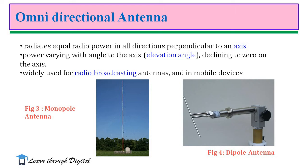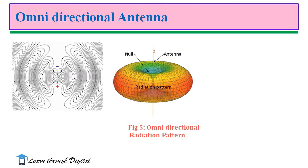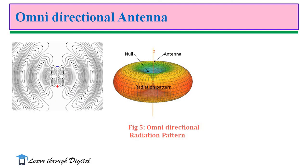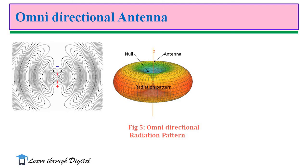Omnidirectional antennas are widely used for radio broadcasting antennas and mobile devices. Examples for omnidirectional antennas include the monopole antenna and dipole antenna, generally used for radio broadcasting and mobile devices. This illustration represents the animation of the omnidirectional radiation pattern, and this figure illustrates the radiation pattern of the omnidirectional antenna. It reaches zero on the axis and radiates electromagnetic energy in the horizontal plane.